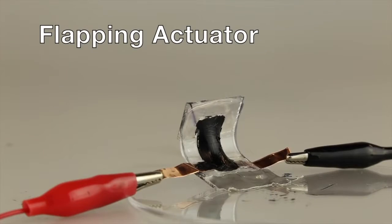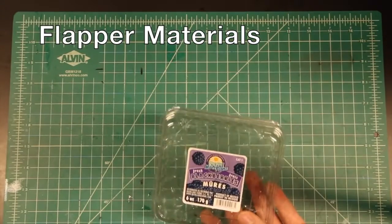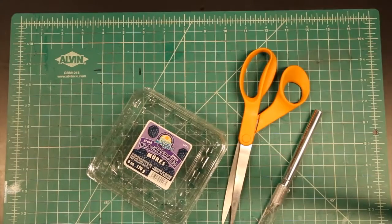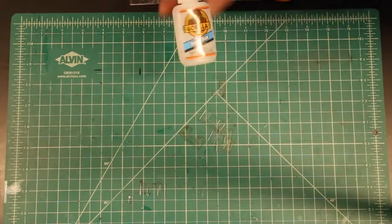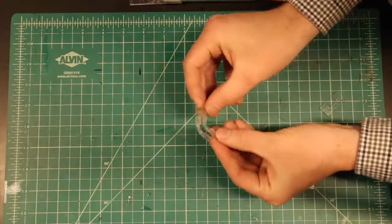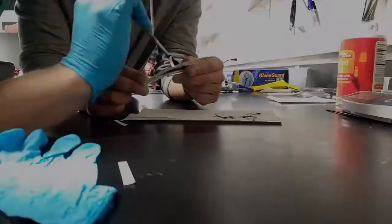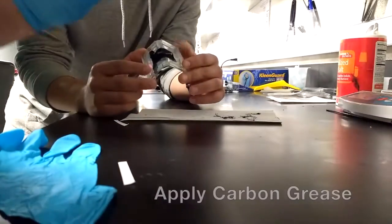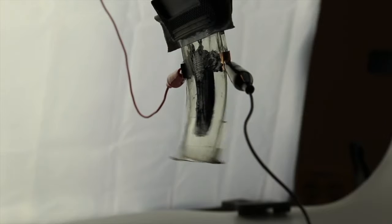Now let's make some flapping actuators. These are the materials you will need for the flapper: thin plastic, tools for cutting, thicker plastic for the frame, super glue to glue the plastics together, VHB tape, and copper tape. Assembly is the same as with the previous actuator. Apply grease to both sides. When high voltage is applied, the actuator flaps. It creates sound at higher frequencies.